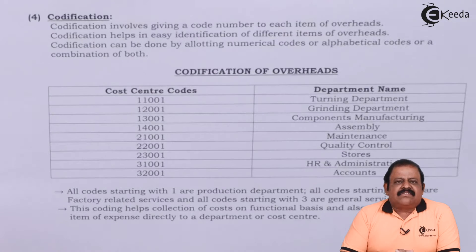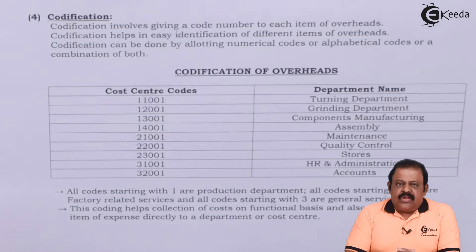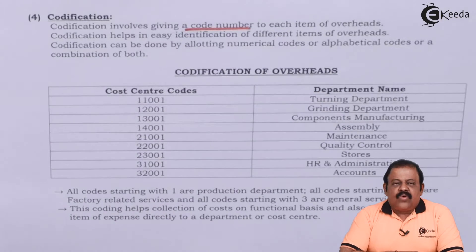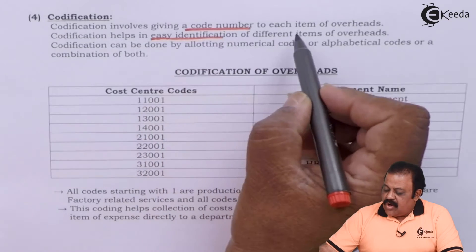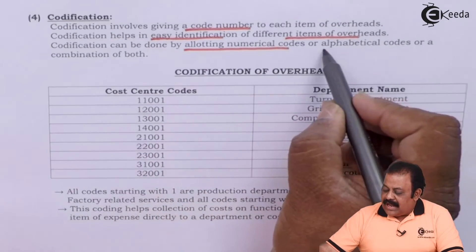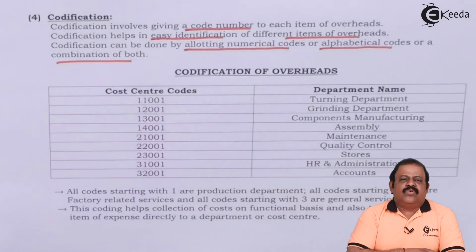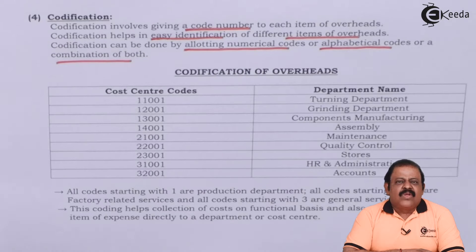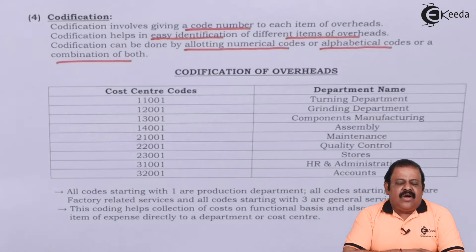After collection, the next step is codification. Codification involves giving a code number to each item of overheads. Codification helps in easy identification of different items of overheads. It can be done by allotting numerical codes, alphabetical codes, or a combination of both. Each time it becomes difficult to record the full name of a particular item of expense or department, so we give code numbers to make allocation simpler. These code numbers can also be used in software easily to allocate those expenses.